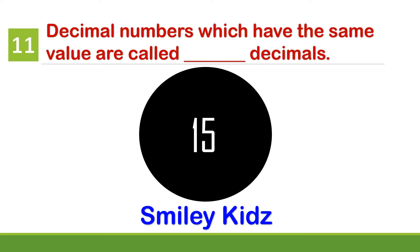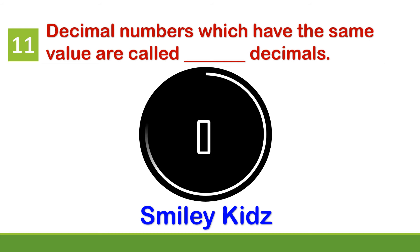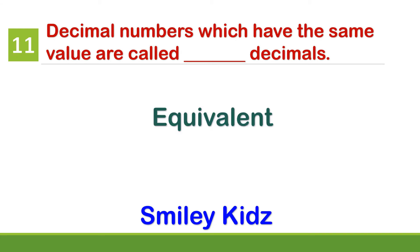Question number 11. Decimal numbers which have the same value are called dash decimals. Your time starts now. Your time is up. The correct answer is equivalent decimals. Decimal numbers which have the same value are called equivalent decimals.